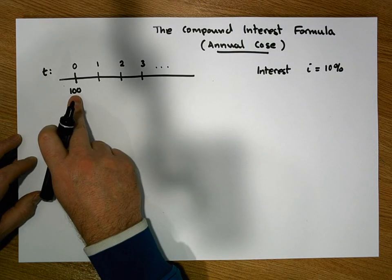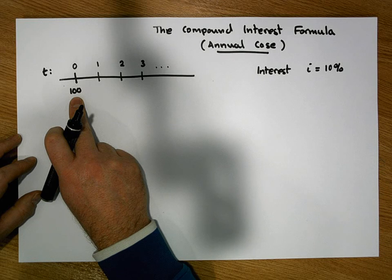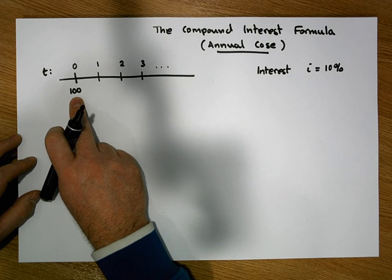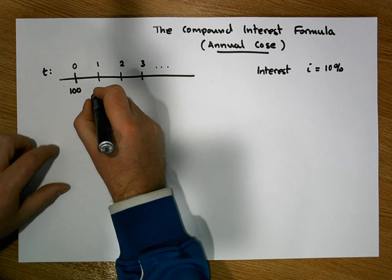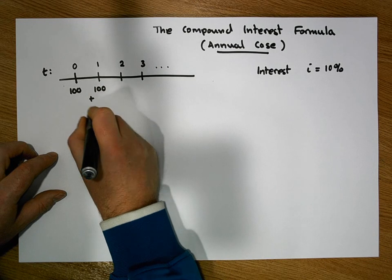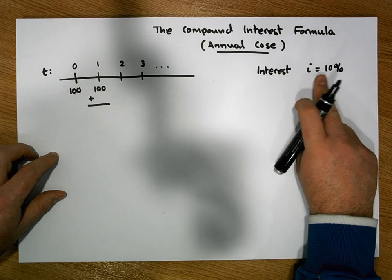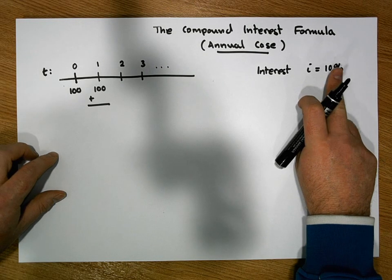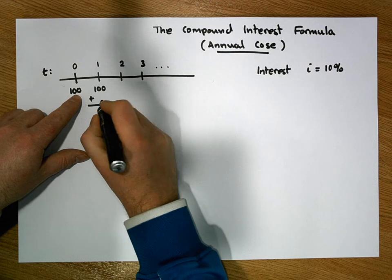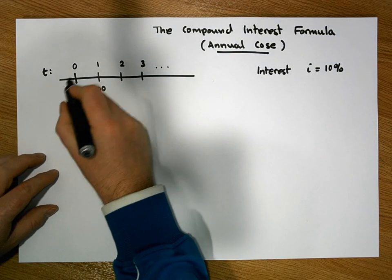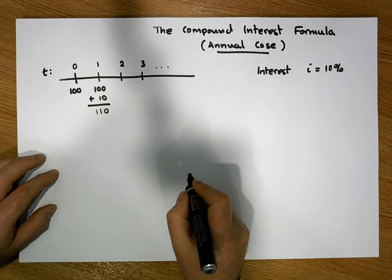This timeline represents the future value of the account at any particular moment in time. At time zero when we place 100 euros into the account we wouldn't expect to receive any reward. But after one year has elapsed we would expect to have what we had previously — 100 euros — plus a reward of 10 percent of 100, which is 10 euros. So after one year we'd expect to have 110 euros in our account.